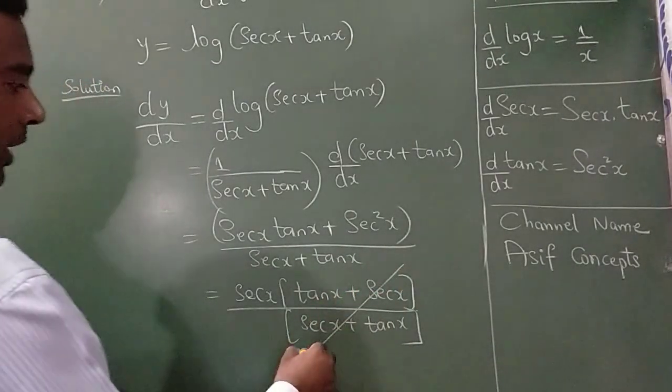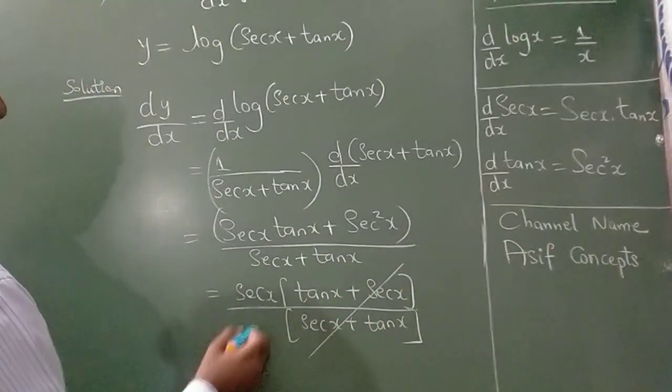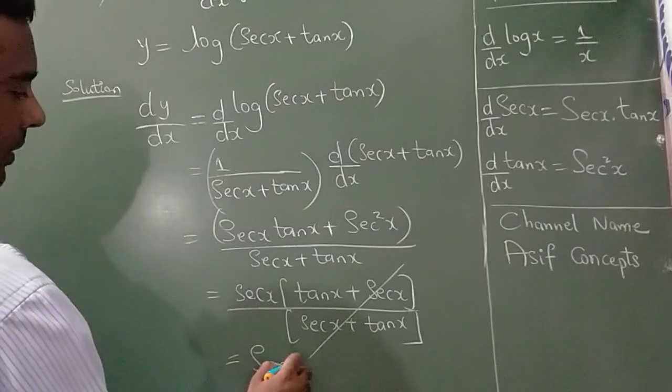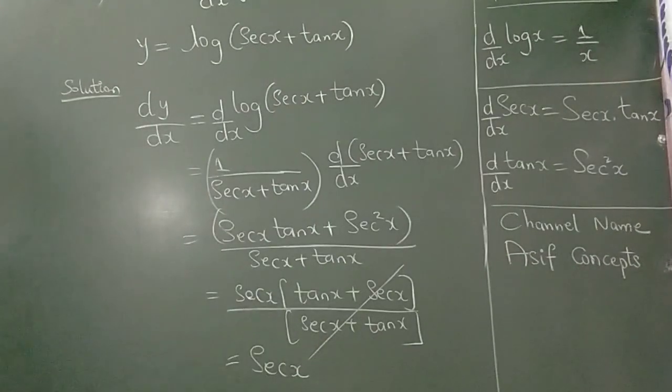Now, take common in the numerator. These two get cancelled, so the final answer is sec x.